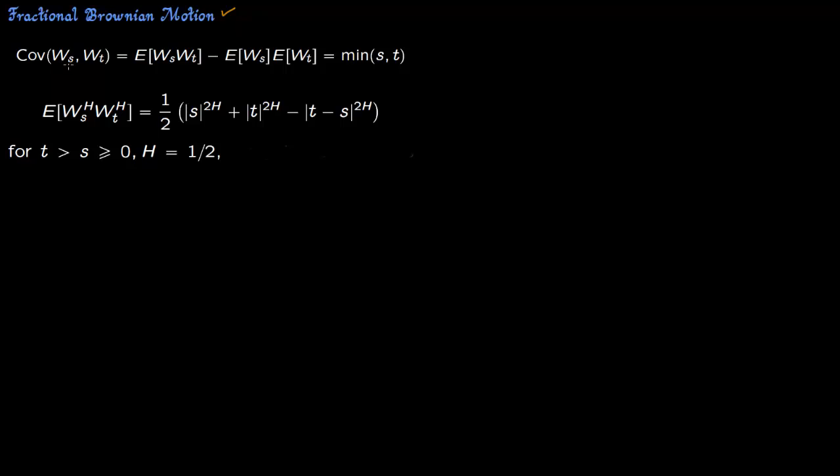So here the covariance between two Brownian motions, Ws and Wt, you just write down the covariance formula: expected value of Ws times Wt minus expected value of Ws times expected value of Wt. The expected value of any Brownian motion is zero, so this is zero, this is zero.